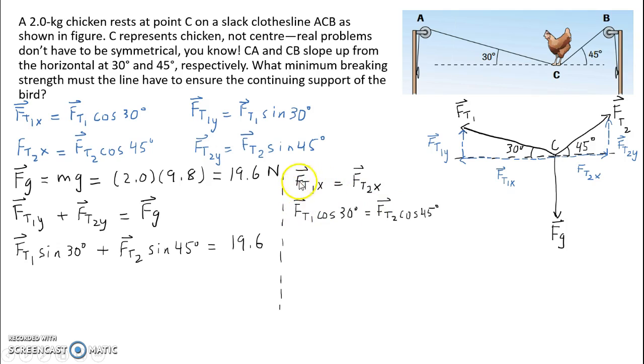Replacing FT1x with FT1 cos 30 and replacing FT2x with FT2 cos 45, we get an expression in the horizontal dimension.